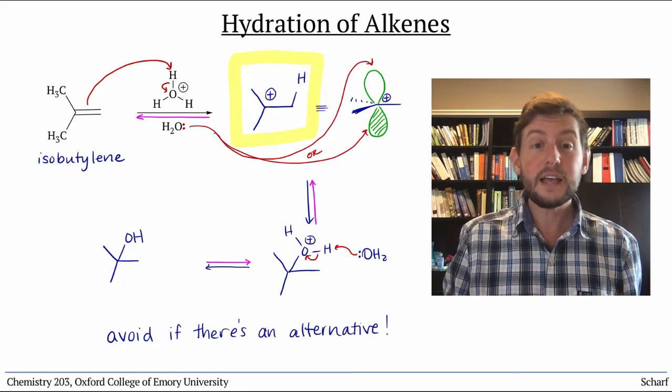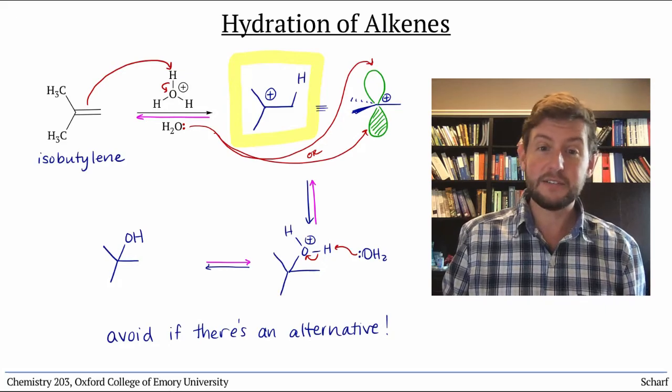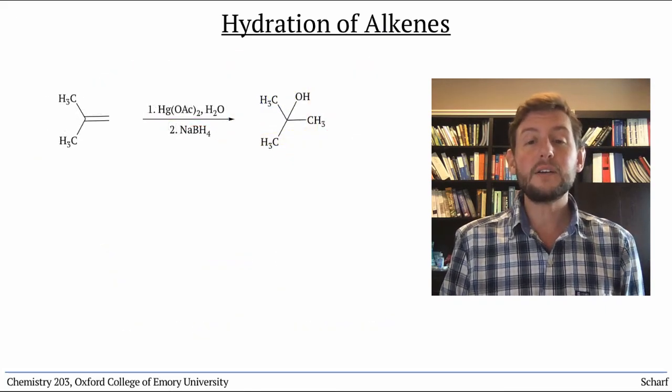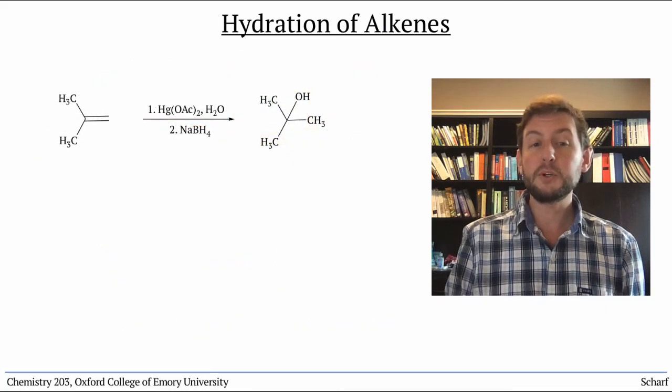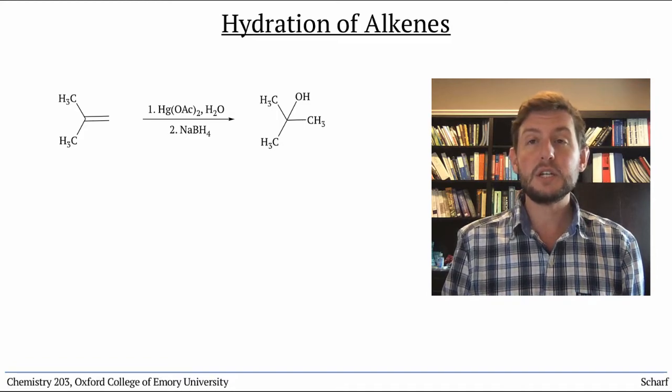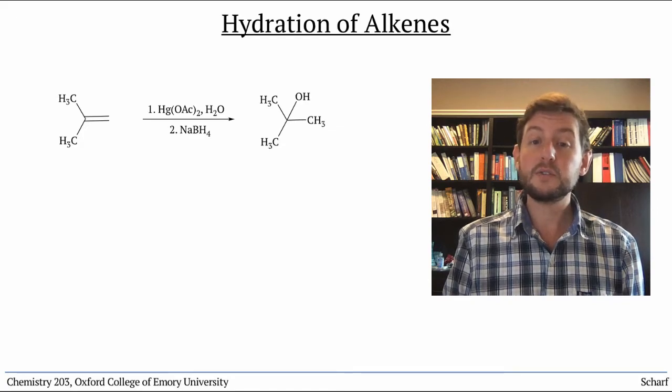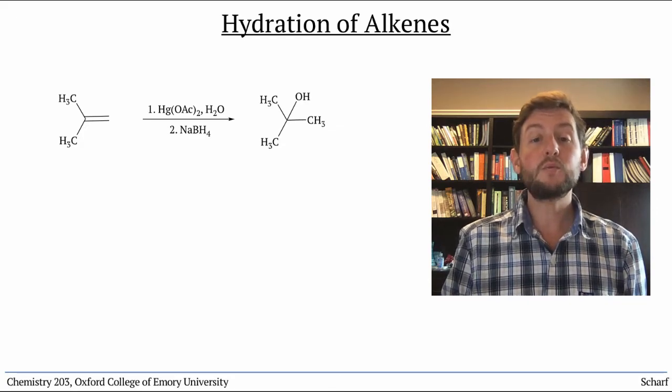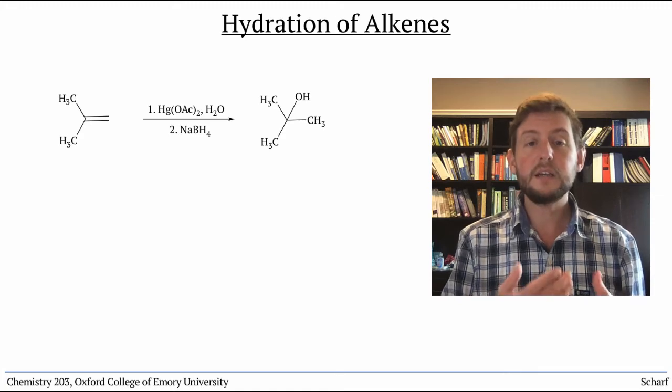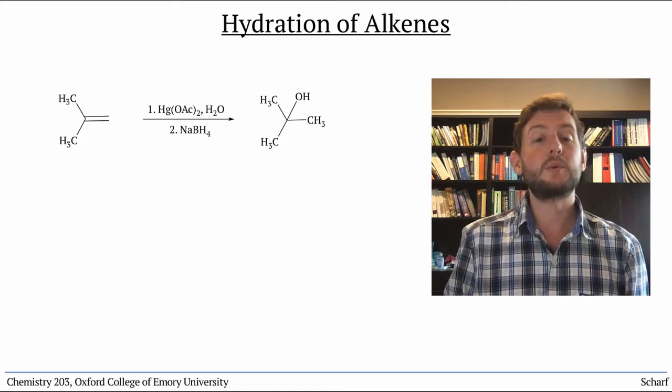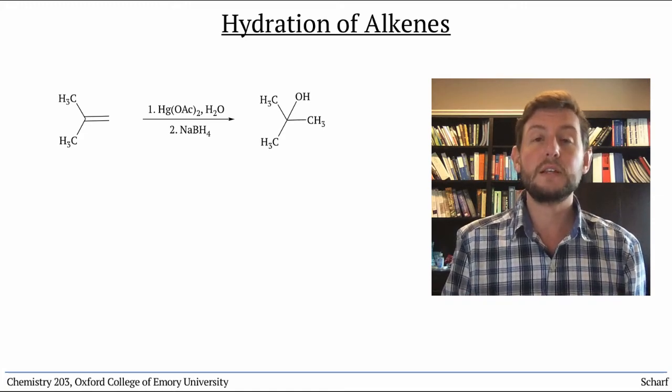And lucky for us, there is an alternative. If we treat an alkene with a reagent called mercury-2 acetate in water, followed by a familiar reagent, sodium borohydride, we reliably, easily, irreversibly, and without any rearrangements, generate the alcohol.